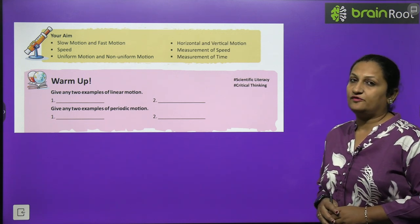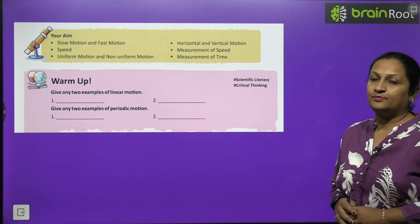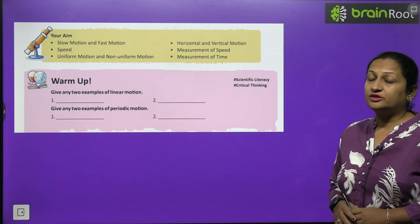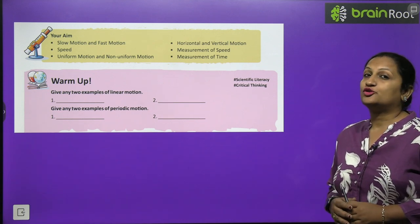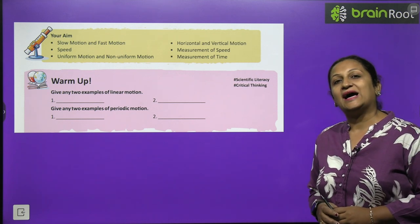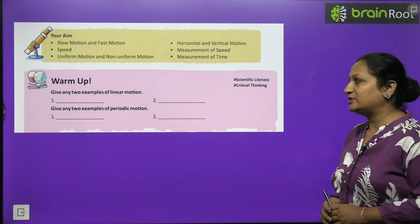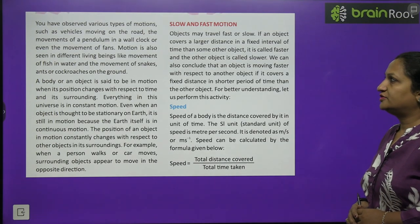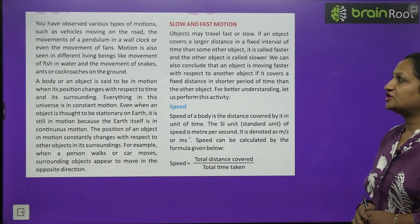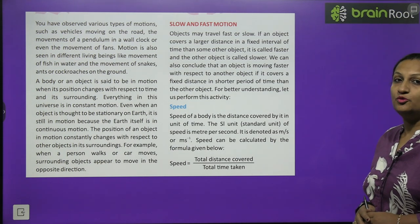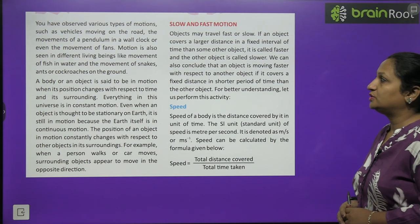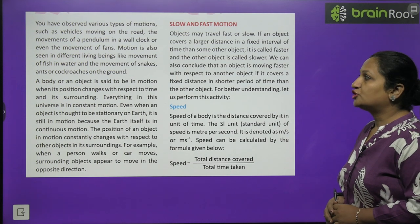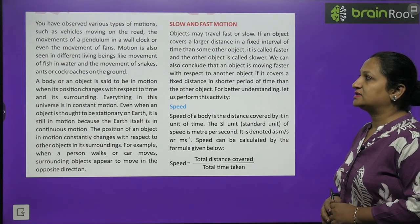For periodic motion, you can write: motion of a fan, motion of the Earth around the Sun, or motion of the Earth around its own axis — any two examples from these. You have observed various types of motion such as vehicles moving on a road, the movement of a pendulum in a wall clock, and even the movement of fans. Motion is seen in different living beings.